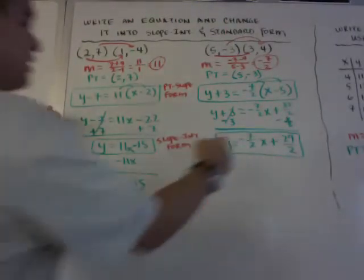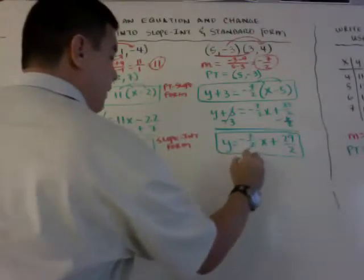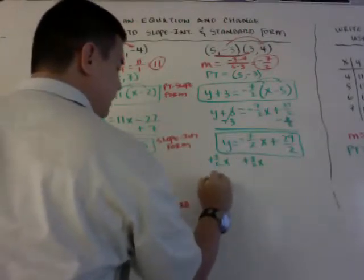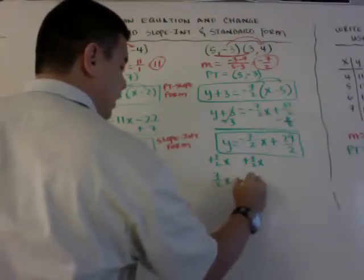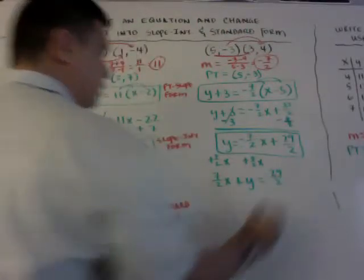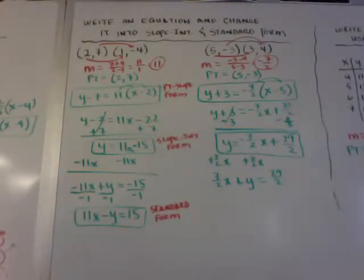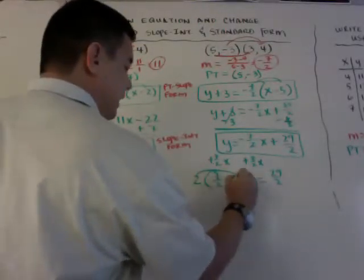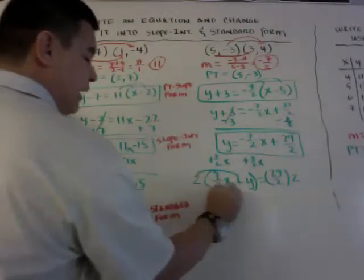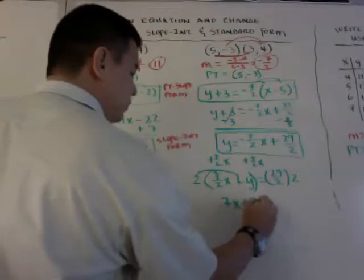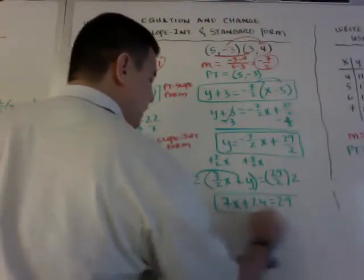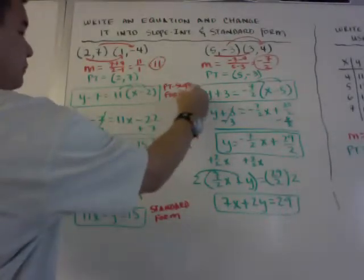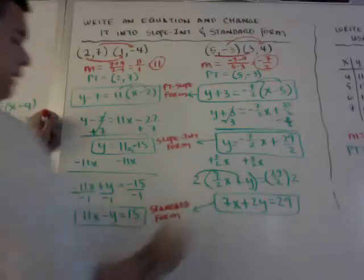To convert to standard form, add 7 halves x to both sides: 7 over 2 x plus y equals 29 over 2. Since we have fractions, multiply both sides by 2 to get integers: 7x plus 2y equals 29. That's the standard form. So we have point-slope, slope-intercept, and standard form all shown here — that's how you go back and forth between the different types of linear equations.